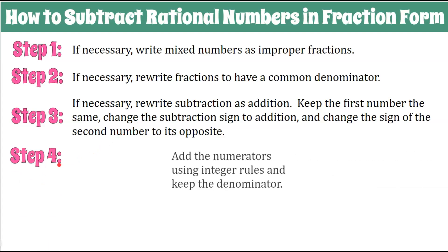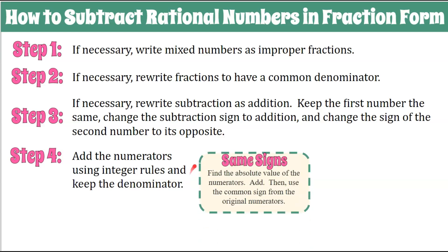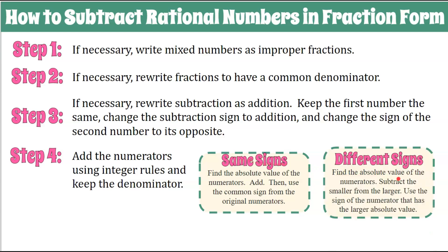Step 4: add the numerators using integer rules and keep the denominator. Remember our integer rules. If they have the same signs, we're going to find the absolute value of the numerators, add, then use the common sign from the original numerators. Same sign — add the absolute value and take on that sign. Different signs — find the absolute value of the numerators, subtract the smaller absolute value from the larger absolute value, and then use the sign of the numerator that had the largest absolute value.